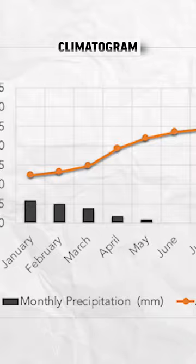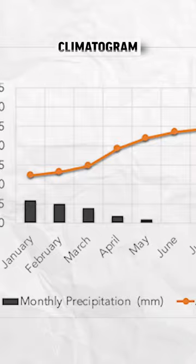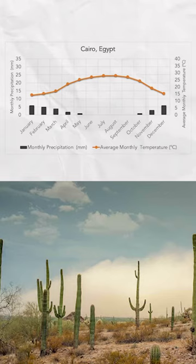Notice that this climatogram shows temperatures consistently above freezing and months with little to no rainfall throughout the year, which hopefully you're starting to recognize now as the subtropical desert biome that we've been talking about in this video.